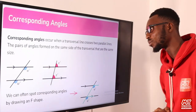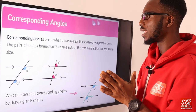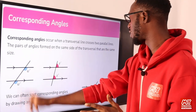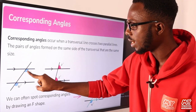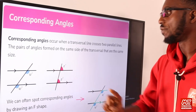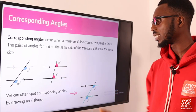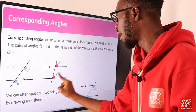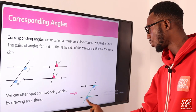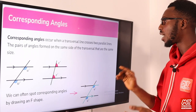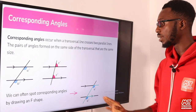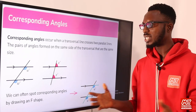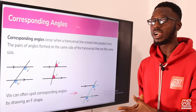Corresponding angles occur when a transversal line crosses two parallel lines. The pairs of angles formed on the same side of the transversal are corresponding — one is inside and one is outside. You can spot them using the F shape. You can draw an F and see the angles highlighted. Whether the F is flipped or reversed, it's still the same identification. This is how you identify your corresponding angle.